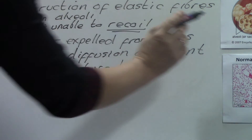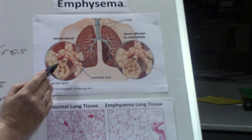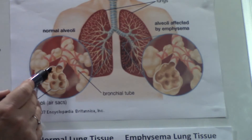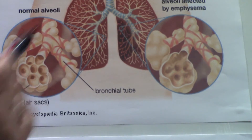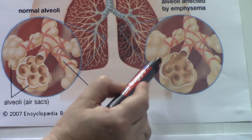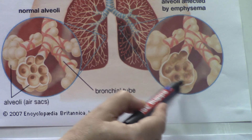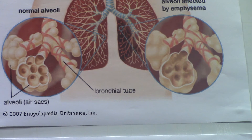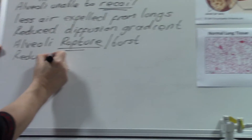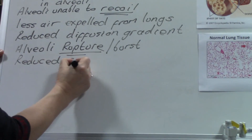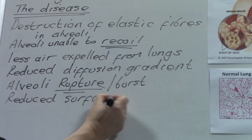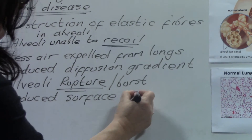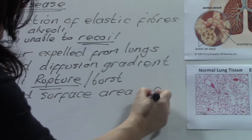You can see here on the artist's impression normal alveoli, and here you can see there is some destruction due to bursting. This means that there is less surface area — a reduced surface area of alveoli.